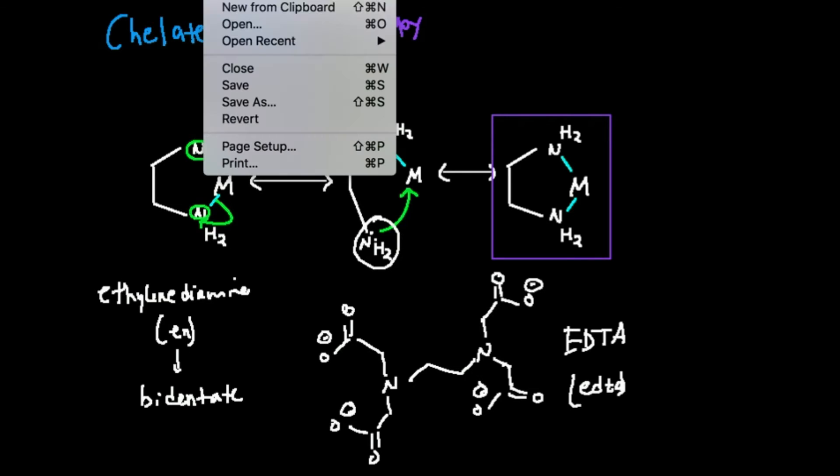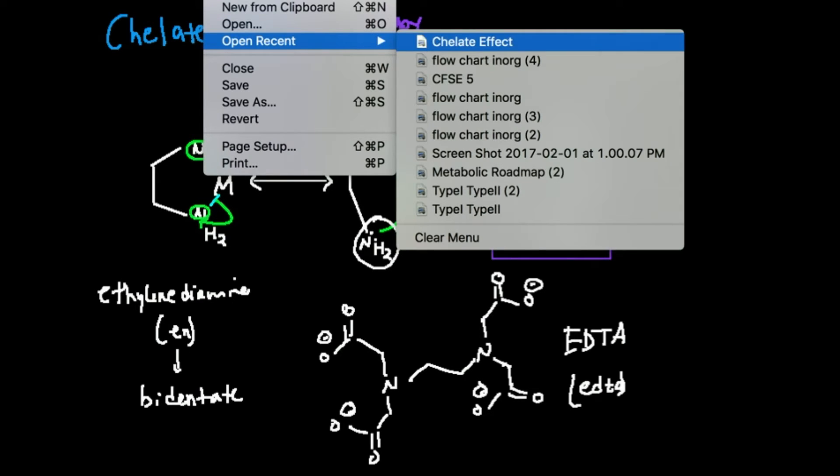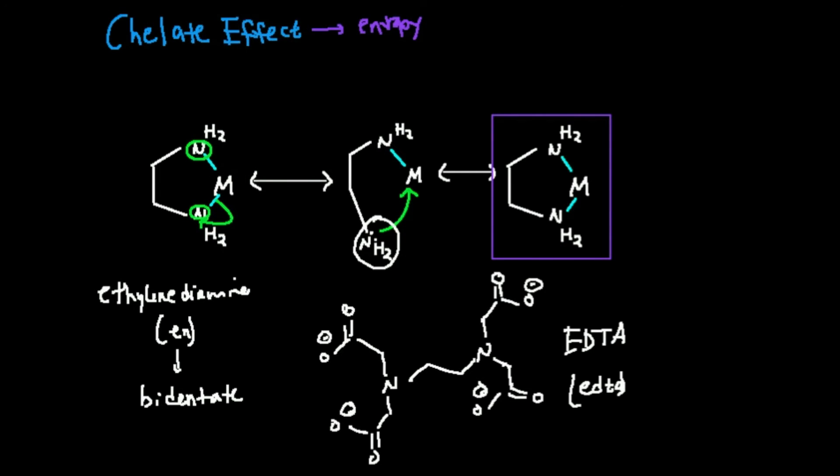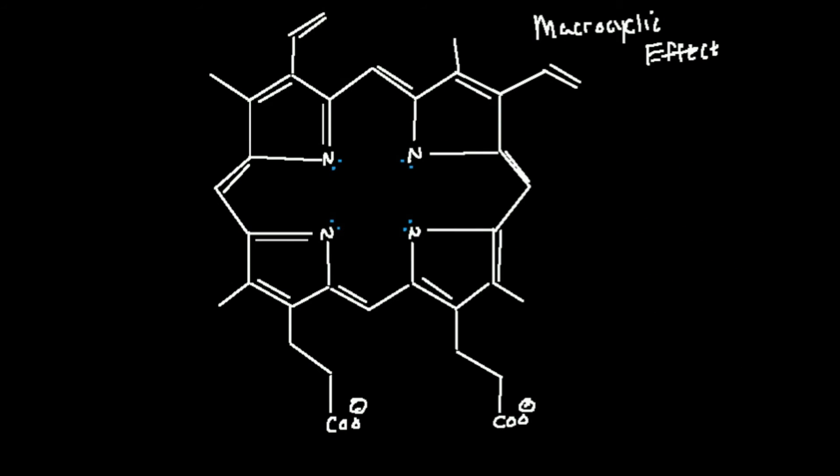But something very strange happens. Something strange will happen ultimately whenever I have a structure like this. I mentioned EDTA is tetradentate. It has four binding sites for a metal. This does two. There's one binding site here, this nitrogen, two, this one, three, this one, and four, this one. There's four binding sites.